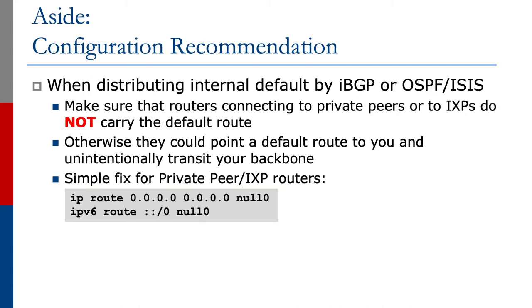Just a note: when we're distributing internal defaults by IBGP, OSPF, or ISIS, make sure that routers connected to private peers or to Internet Exchange Points do not carry the default route. If they carry the default route or have the full BGP table, your peers could point a default route to you and unintentionally transit your backbone. The simple fix for private peer or Exchange Point based routers is to put a static default route to the null interface — the example shows how to do it for both IPv4 and IPv6.